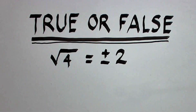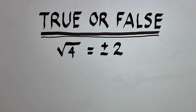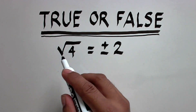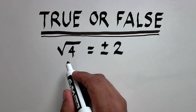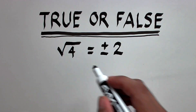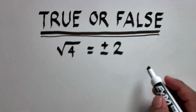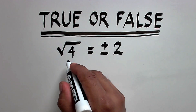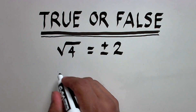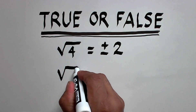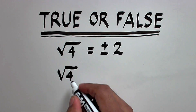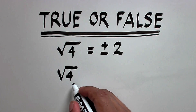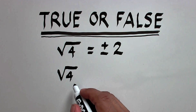This kind of question is oftentimes causing a lot of debate. There is a difference when you are computing for the value of an expression and when you are solving an equation. Right here, what is given is the square root of 4. So we are computing for the value of this expression, square root of 4.